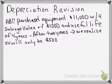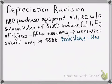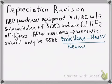The next item on the worksheet is depreciation revision. Whenever we look at depreciation revision, we have to figure out how much we have already depreciated and how much is still left to be depreciated. The equation is: book value at that period of time, minus the new salvage value, divided by the new useful life remaining.